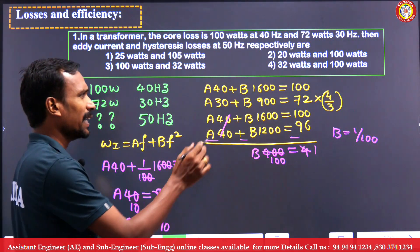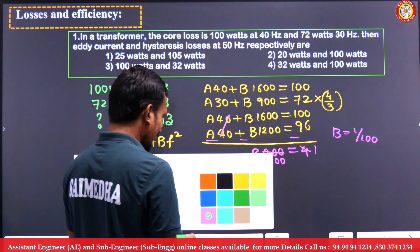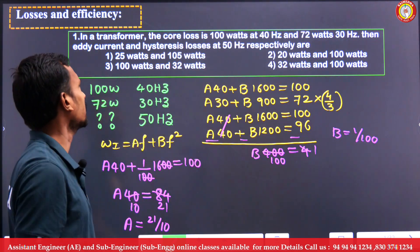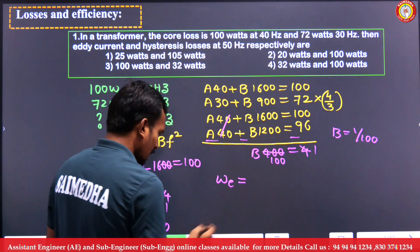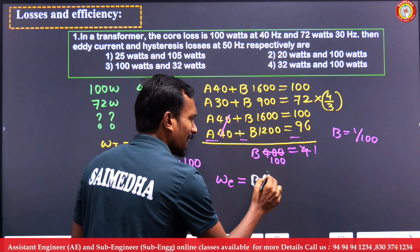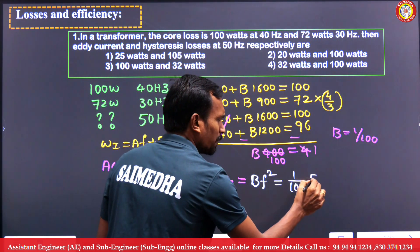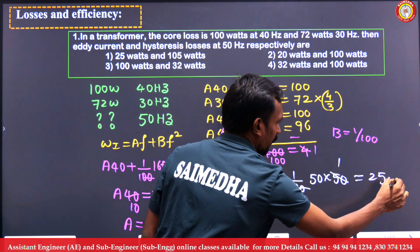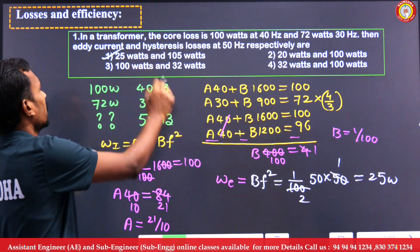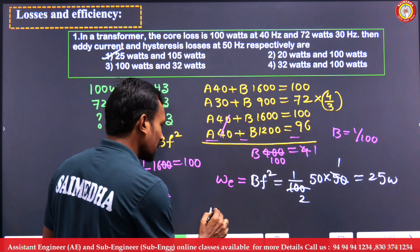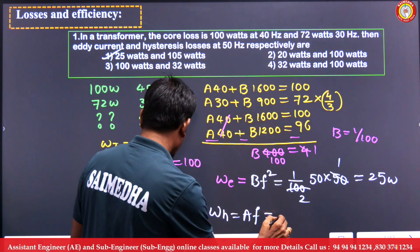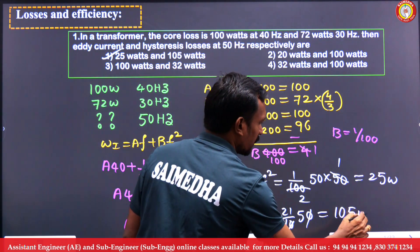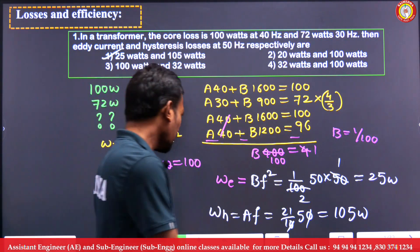Now we can calculate the losses at 50 Hz. Eddy current loss = b×f² = (1/100)×50² = (1/100)×2500 = 25 watts. Hysteresis loss = a×f = (21/10)×50 = 105 watts. This is an easy question once you know the approach — very important for competitive exams.